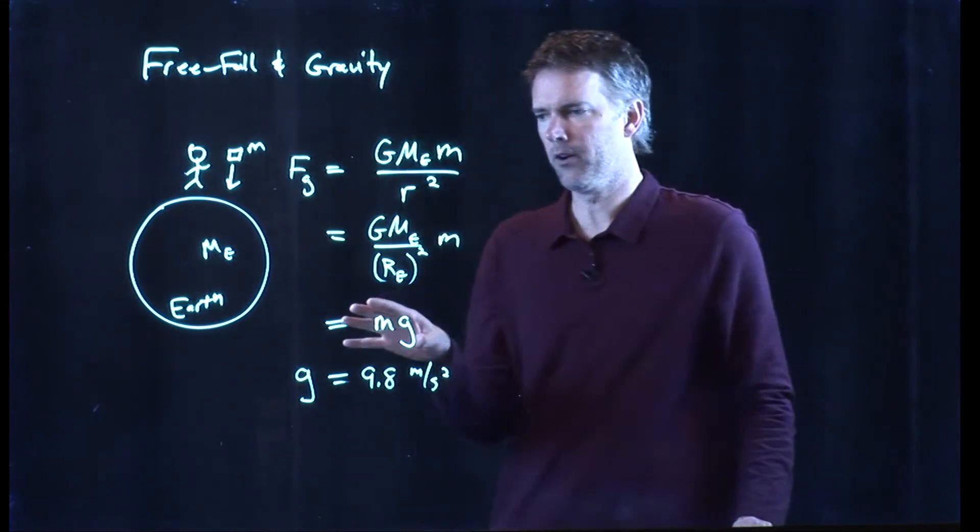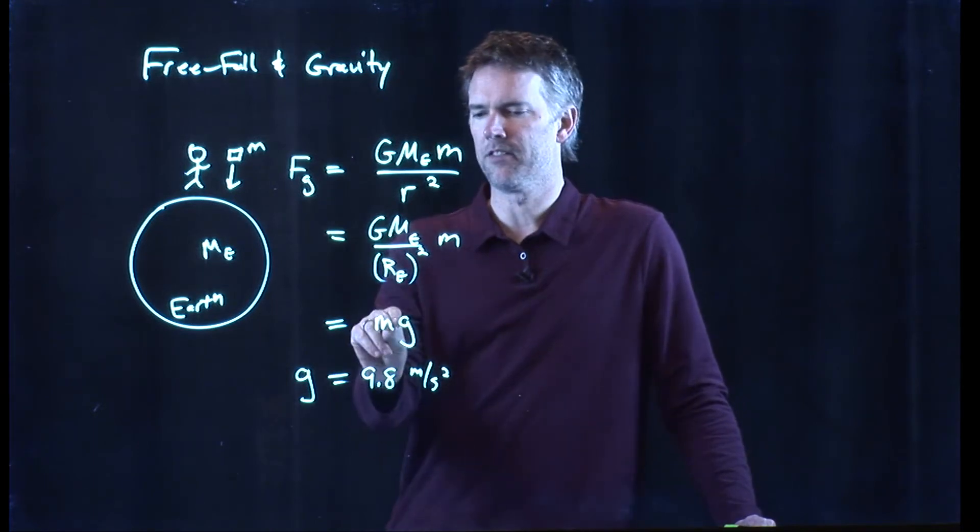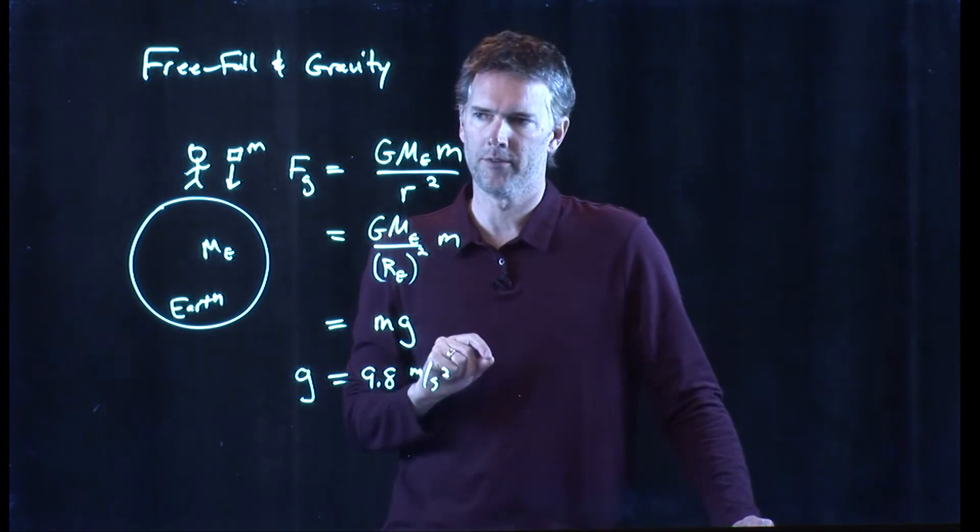This whole thing becomes little g where g is 9.8 meters per second squared. When you're near the surface of the earth the gravitational force is essentially constant and it's equal to m times g, which comes from this universal law of gravitation.